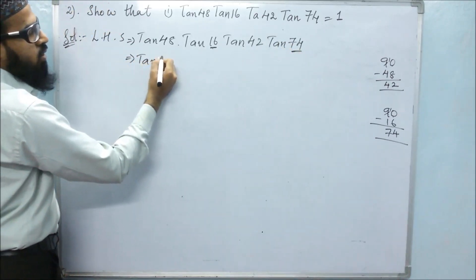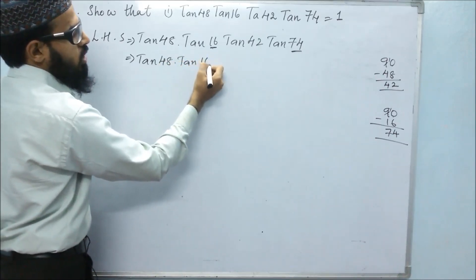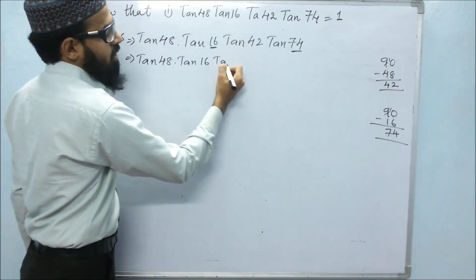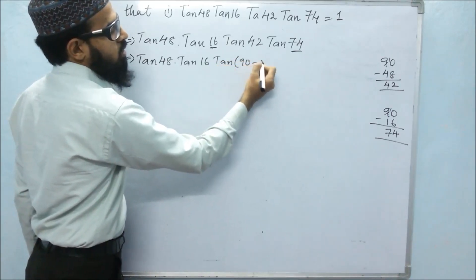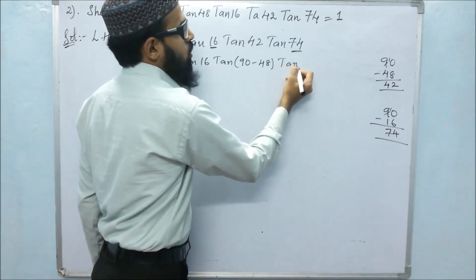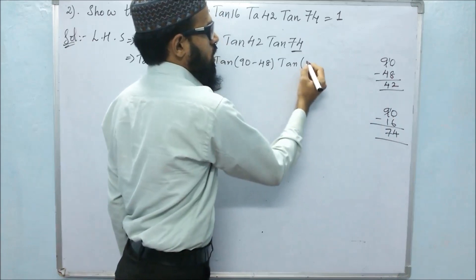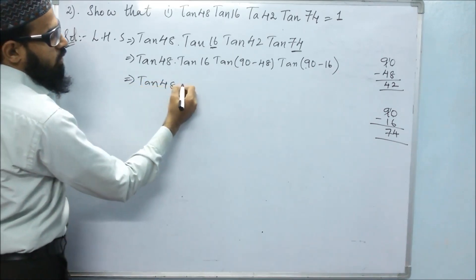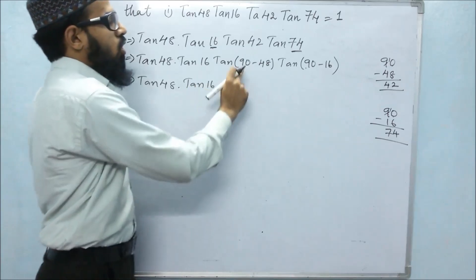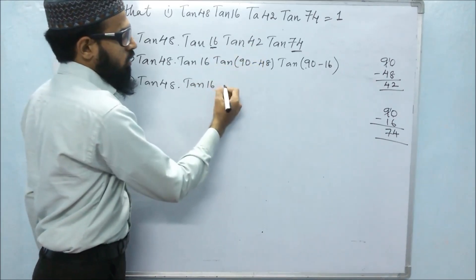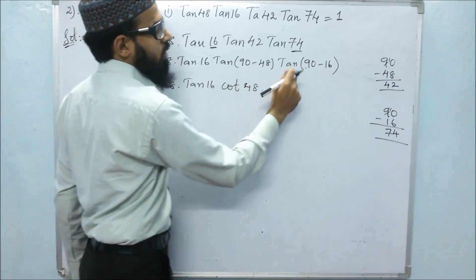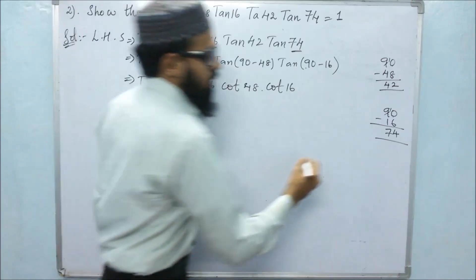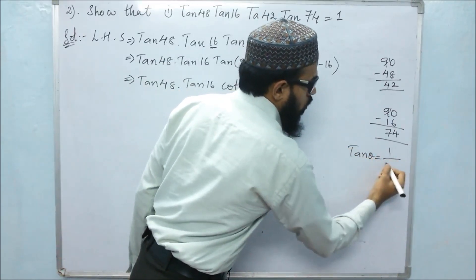Let's rewrite: tan48 × tan16. Since 42 = 90 minus 48, we can write tan42 as tan(90 - 48). On 90 degrees, tan changes to cot. So tan42 = cot48. Similarly, tan74 = tan(90 - 16), and on 90, tan changes to cot, so tan74 = cot16. We can also write 1 by cot16. We know that tan and cot are reciprocals of each other, so for tan theta we can write 1 by cot theta.